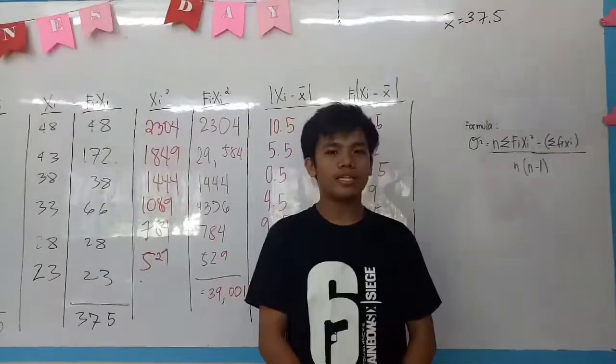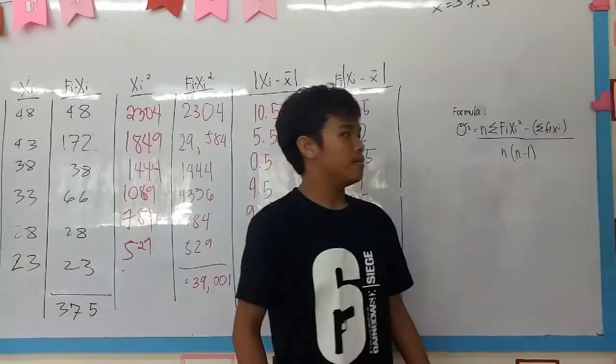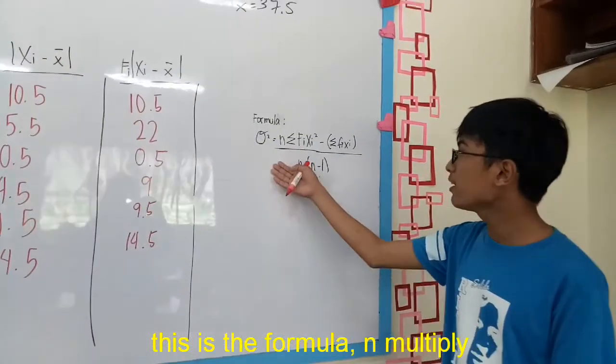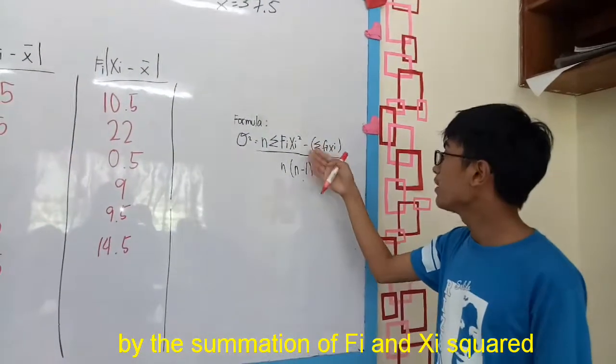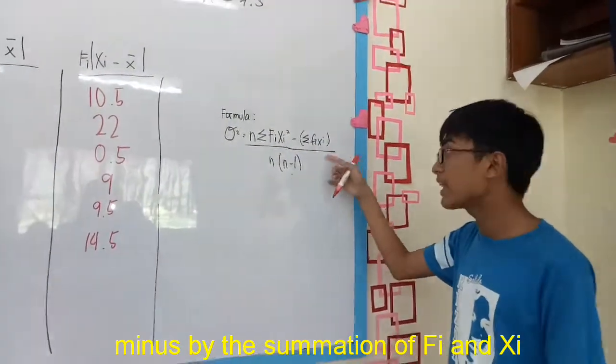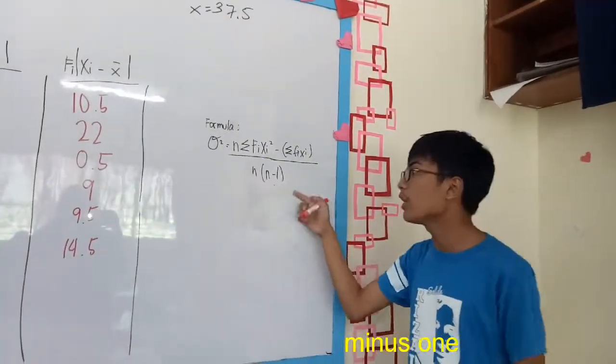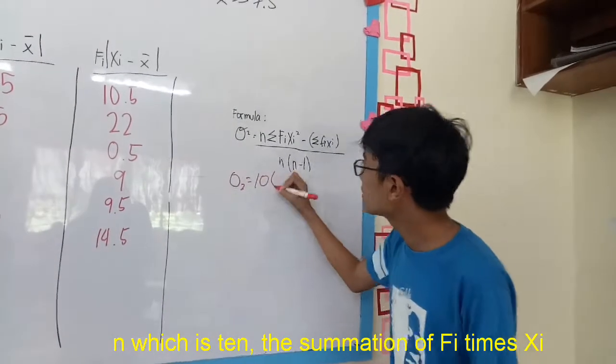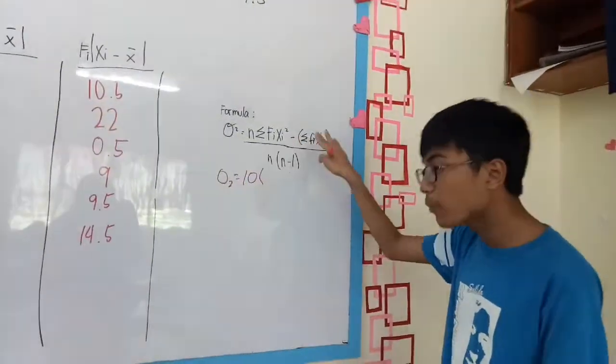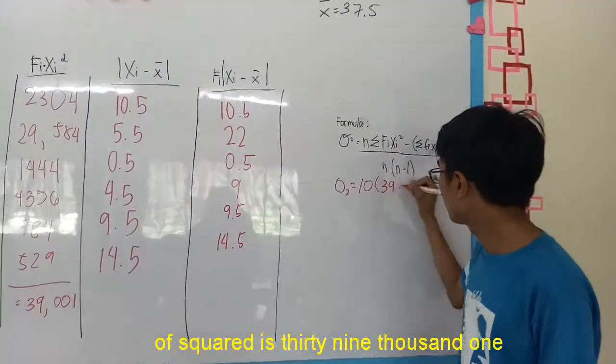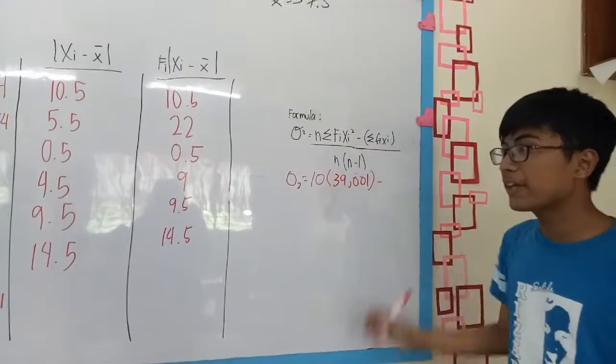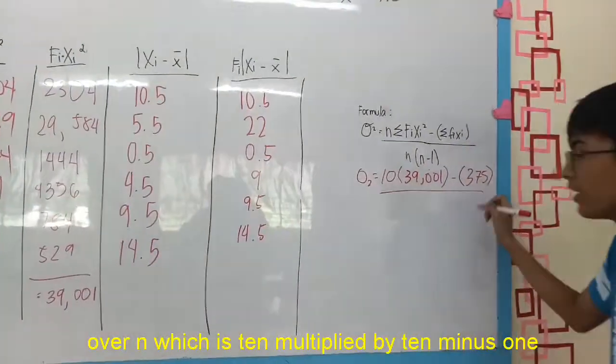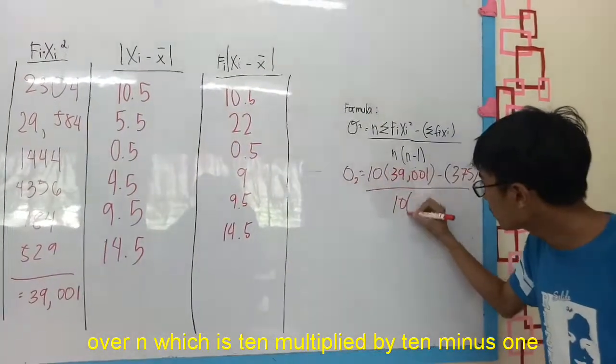We are going to show you how to finally show the measure of variance. And for that we have Albert to show you how to do that. This is the formula: N multiplied with the summation of Fi times Xi squared minus the summation of Fi times Xi squared, over N times N minus 1. So first we multiply our values. N which is 10, times the summation of Fi times Xi squared which is 39,001, subtracted by the summation of Fi times Xi which is 375 squared, over N which is 10 multiplied by 10 minus 1.